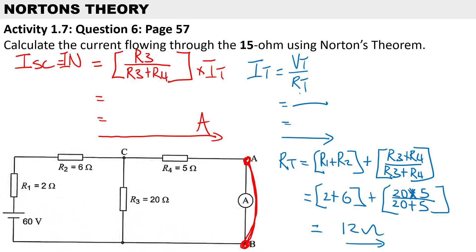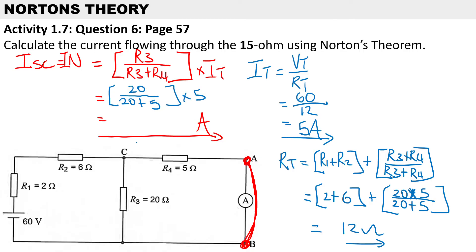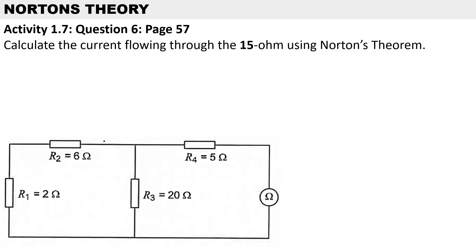With a total resistance of 12 ohms, the total current is 60 divided by 12, giving I_total of 5 amps. Substituting into the current divider rule: R3 (20 ohms) over (20 plus R4 = 5 ohms), multiplied by the total current of 5 amps, gives a short-circuit current of 4 amps — which is the same as Norton's current.